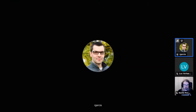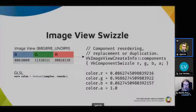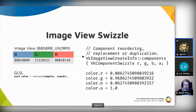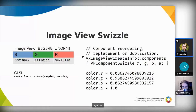However, sampling operations are also affected by one parameter that's not part of the sampler object — it's part of the image view and it's called the component swizzle. In the example I gave before, we got some color values back, but that was supposing that the component swizzle was the identity swizzle. The identity swizzle means that no color components were reordered or replaced, or any operation was done with them.